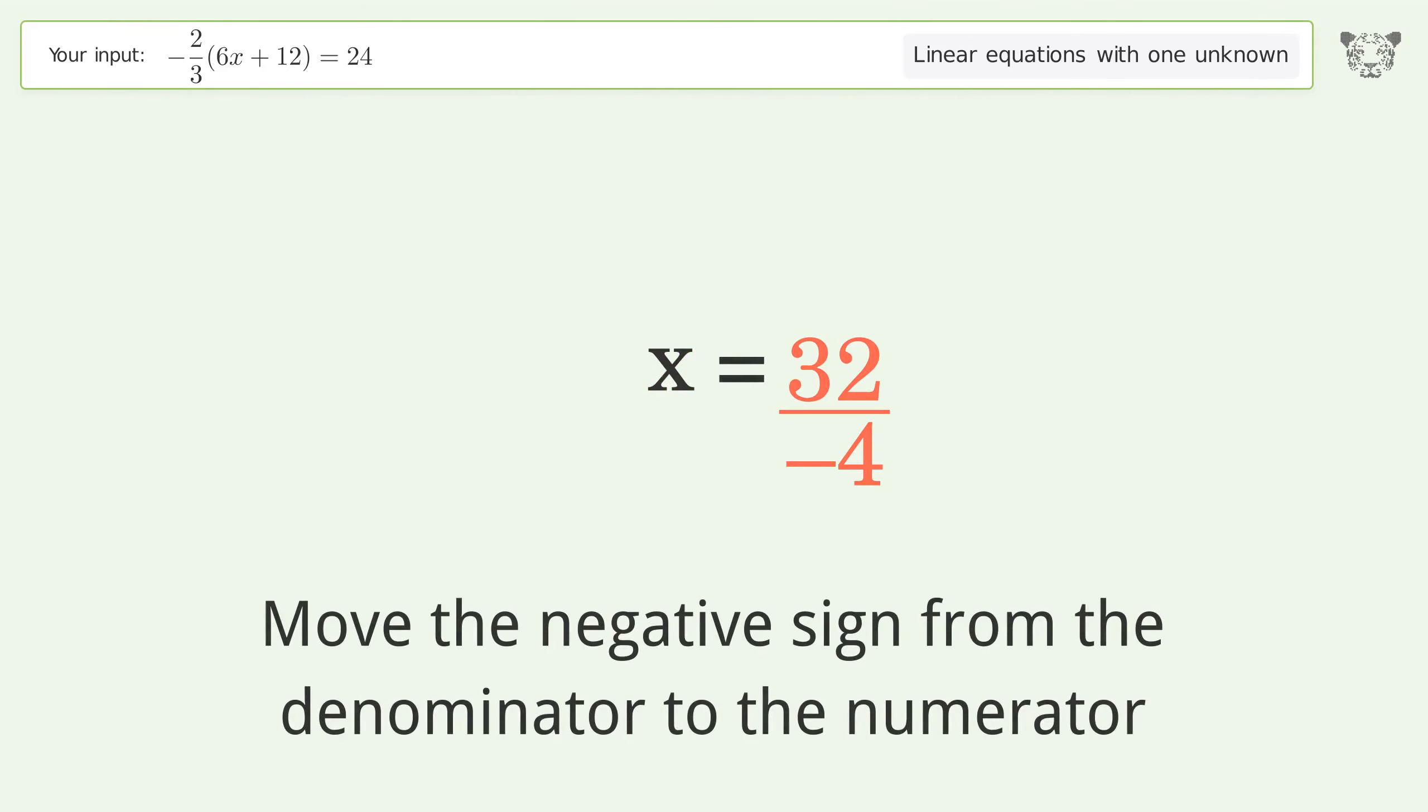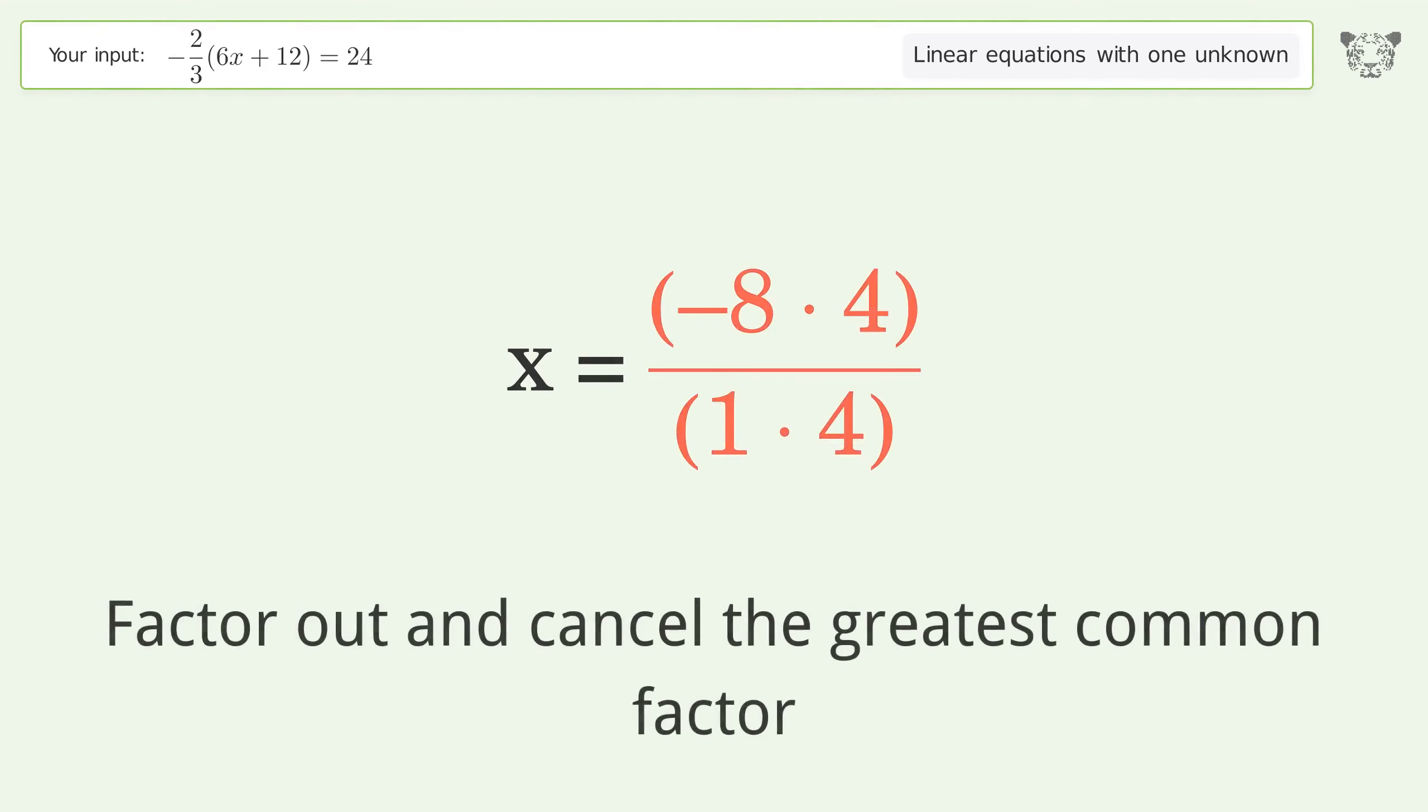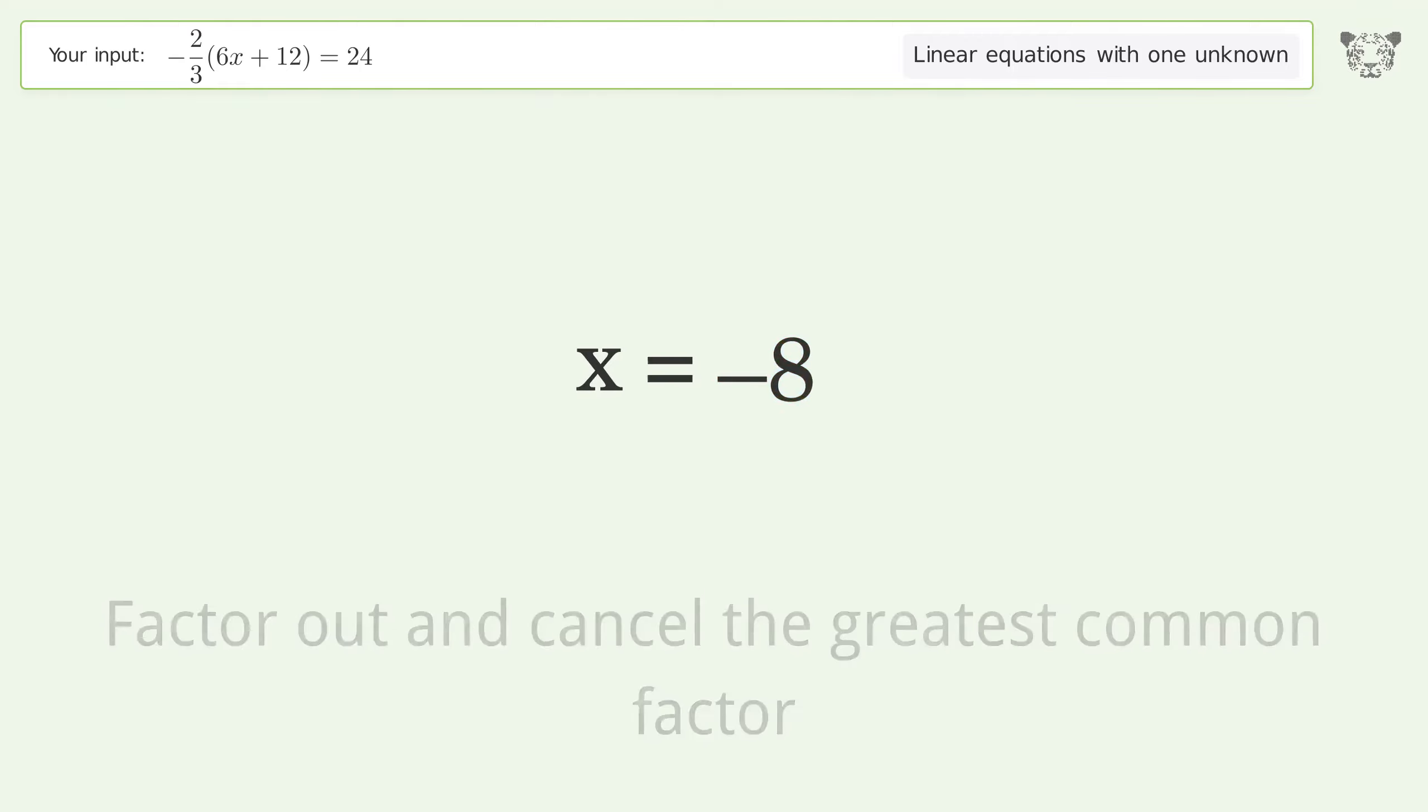Move the negative sign from the denominator to the numerator. Find the greatest common factor of the numerator and denominator. Factor out and cancel the greatest common factor. And so the final result is x equals negative 8.